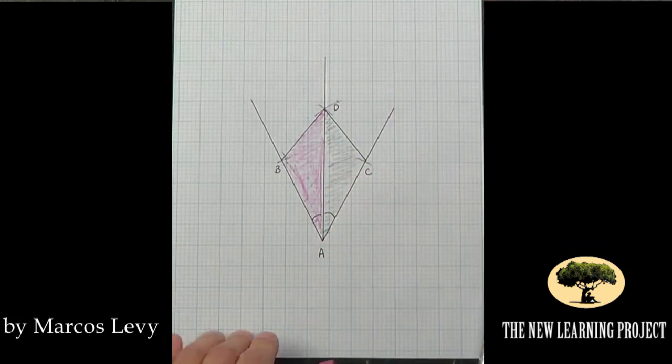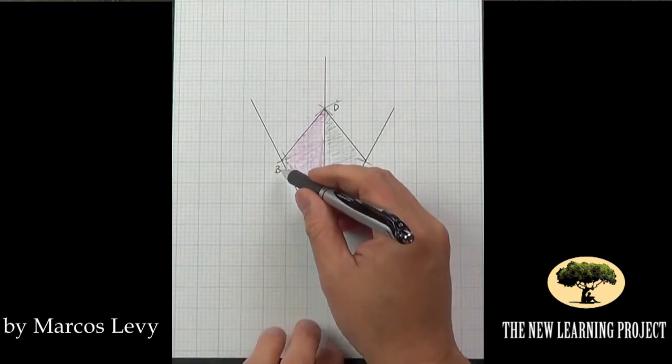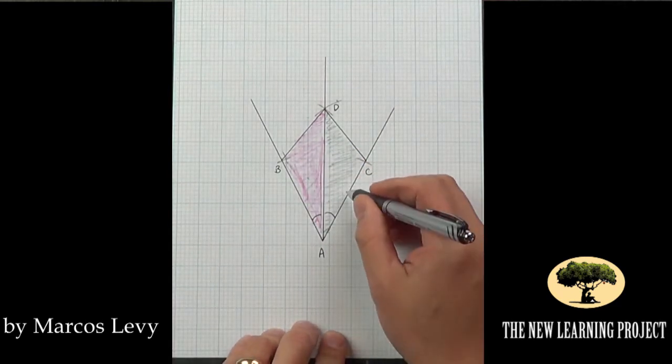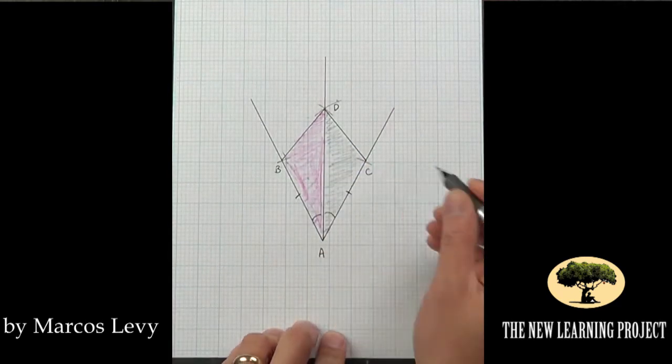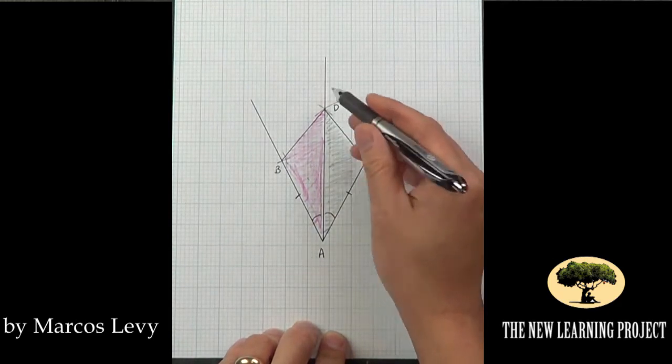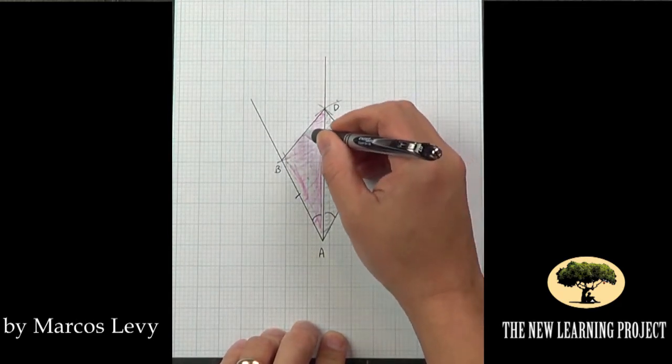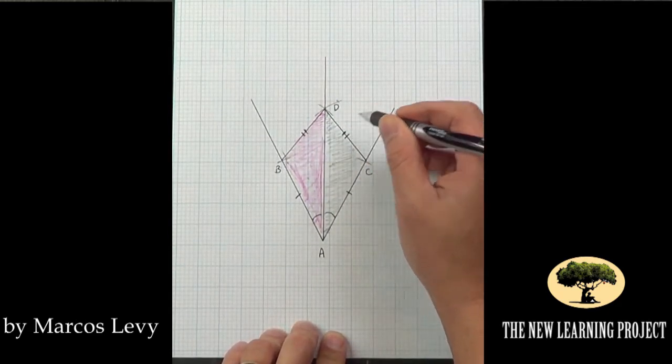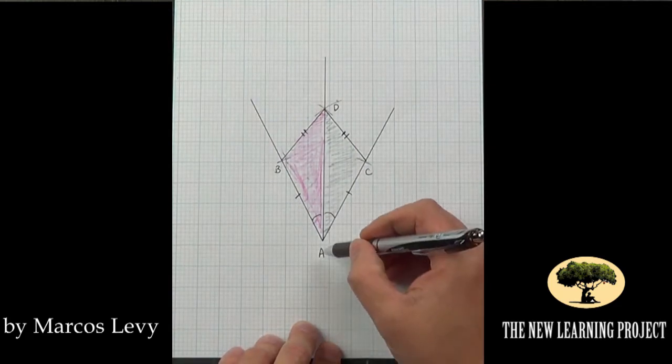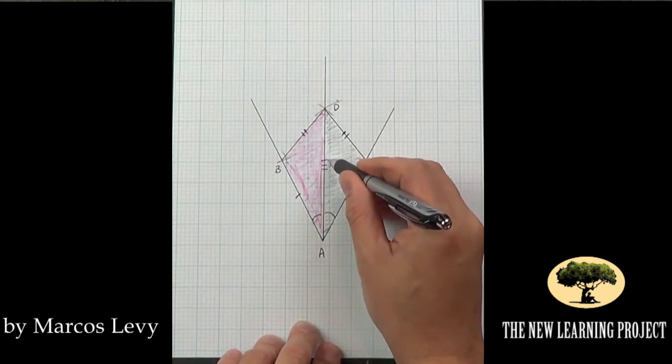We know AB and AC are equal because we use the same compass length. We also know that BD and CD are equal because we used the same compass length, and through the reflexive property we know that AD is equal to itself.